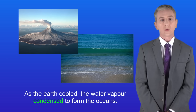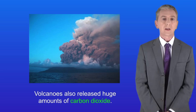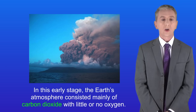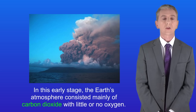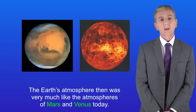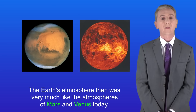One of those gases was water vapor. As the Earth cooled, the water vapor condensed to form the oceans. Volcanoes also released huge amounts of carbon dioxide, so in this early stage the Earth's atmosphere consisted mainly of carbon dioxide with little or no oxygen — very much like the atmospheres of Mars and Venus today.